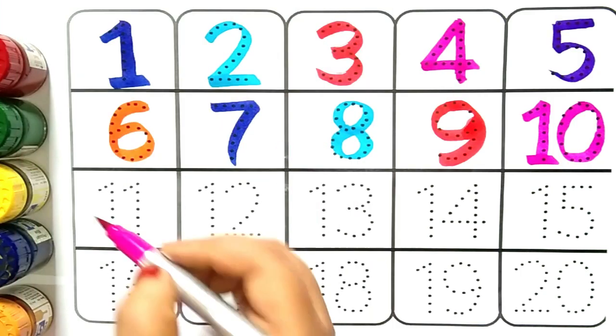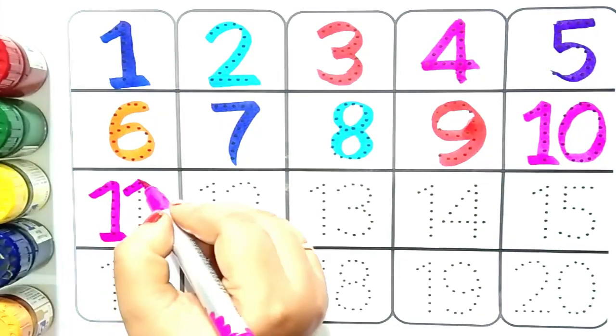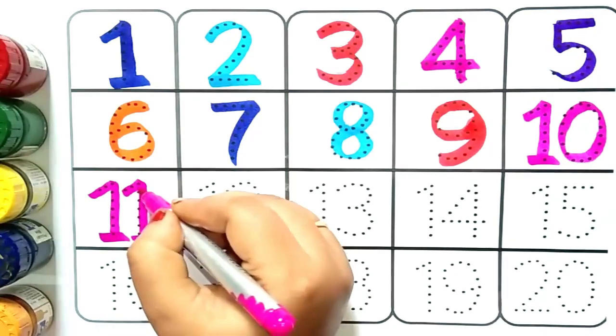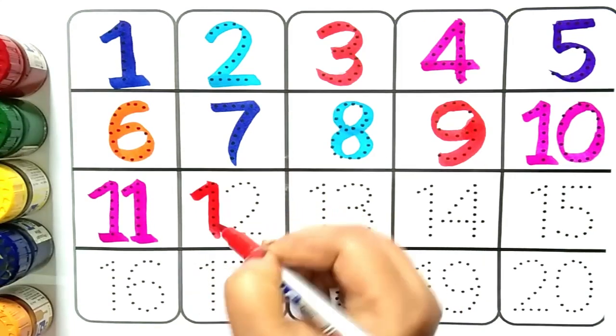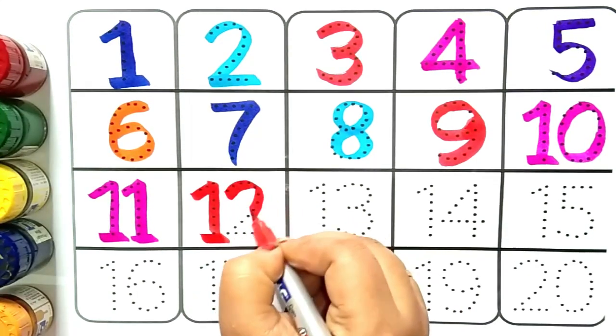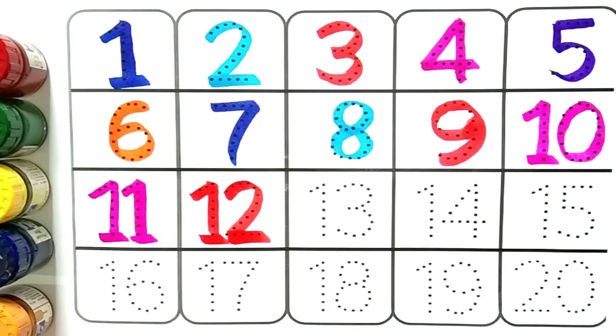After ten comes eleven. This is number eleven. What is it kids? This is number eleven. Twelve.